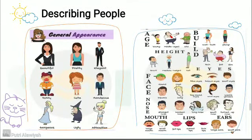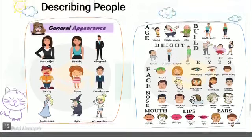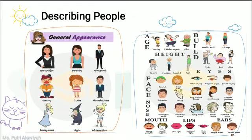And describing people — in describing people you have to use adjectives, or kata sifat. For general description you can use: beautiful, pretty, elegant, funny, cute, handsome, gorgeous, ugly, or attractive. You can also be more specific, describing age, weight, build, face, nose, mouth, lips, ears, or eyes. Later I'm going to ask you to describe a picture. You may screenshot this and make sure you memorize well how to describe people.